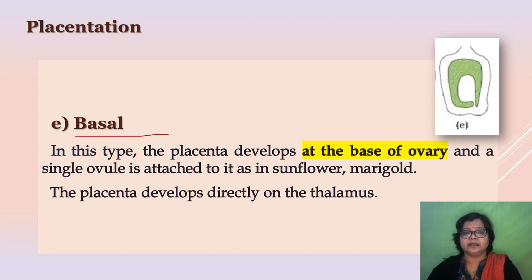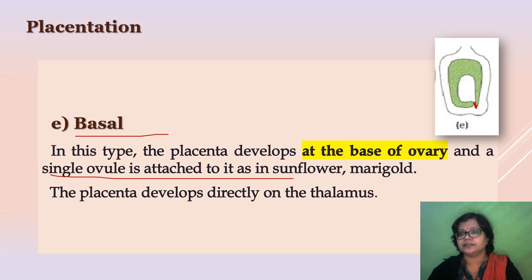The last type is basal placentation. Here, the placenta develops at the base of the ovary and a single ovule is attached to it. This type of placentation is called basal placentation. Example: marigold. The placenta develops directly on the thalamus.